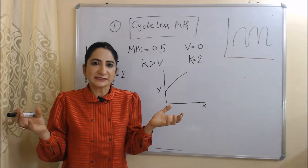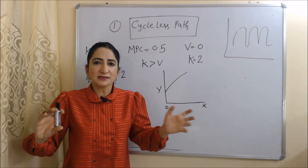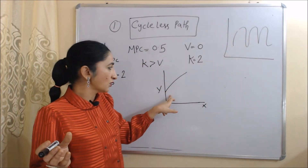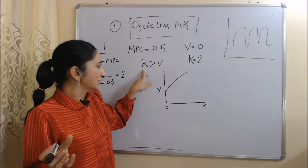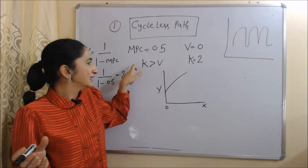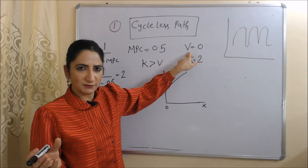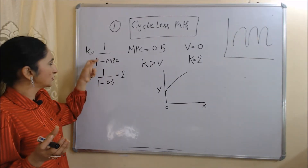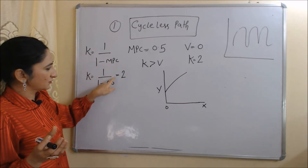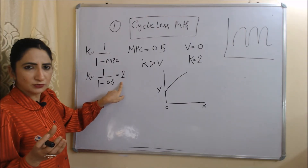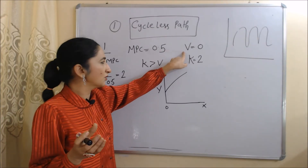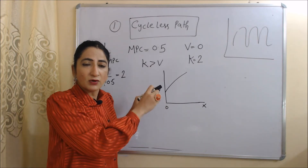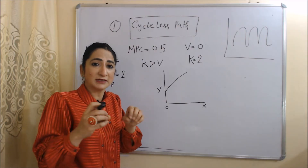The cycleless path means no business cycle will be produced. Business cycles normally go up and down, but in this case no cycles will be produced. This happens because the value of the multiplier is greater than the value of the accelerator. Here the value of the accelerator (V) is equal to 0 and MPC is 0.5, so the multiplier equals 2. Since multiplier is greater than accelerator, the economy will not produce any kind of cycle — it is called the cycleless path because for producing a business cycle, both multiplier and accelerator must work together.